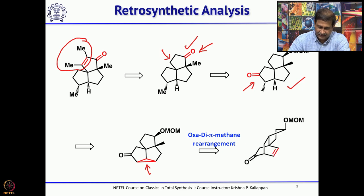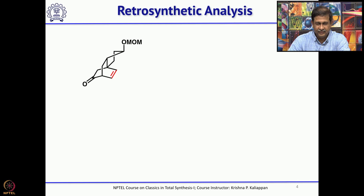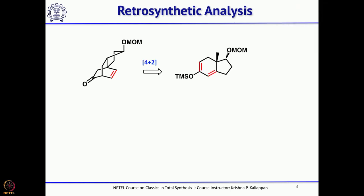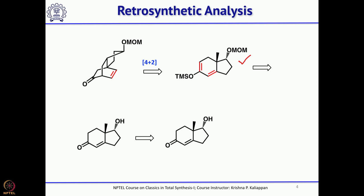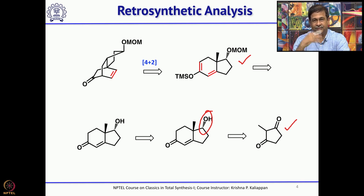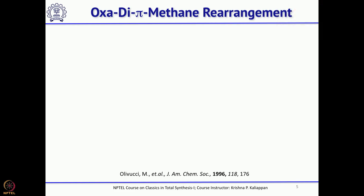This particular ketone can be obtained from a tetracyclic compound containing a cyclopropane, formed through oxa-di-pi-methane rearrangement. Reductive opening of this cyclopropane followed by quenching with methyl iodide gives the intermediate. The key reaction is the oxa-di-pi-methane rearrangement of a tricyclic compound, which can be obtained from a 4+2 cycloaddition reaction. The diene can be obtained from a commercially available compound or made in large quantities from Hajos–Parrish ketone, which comes from 2-methylcyclopentane-1,3-dione using L-proline as catalyst via Robinson annulation — Michael addition followed by aldol reaction.